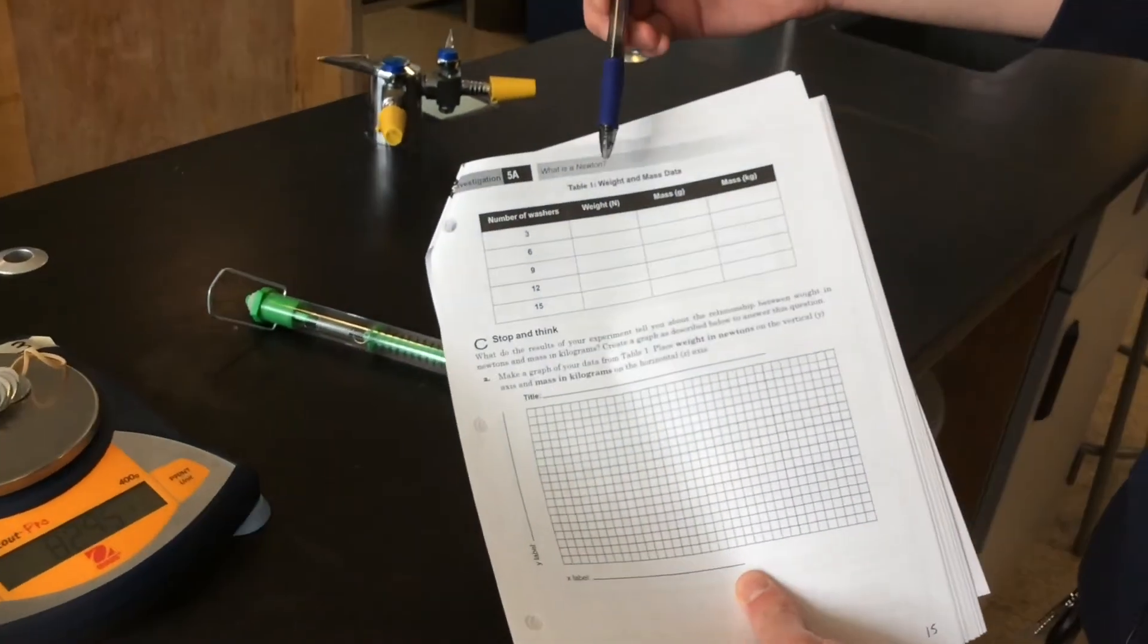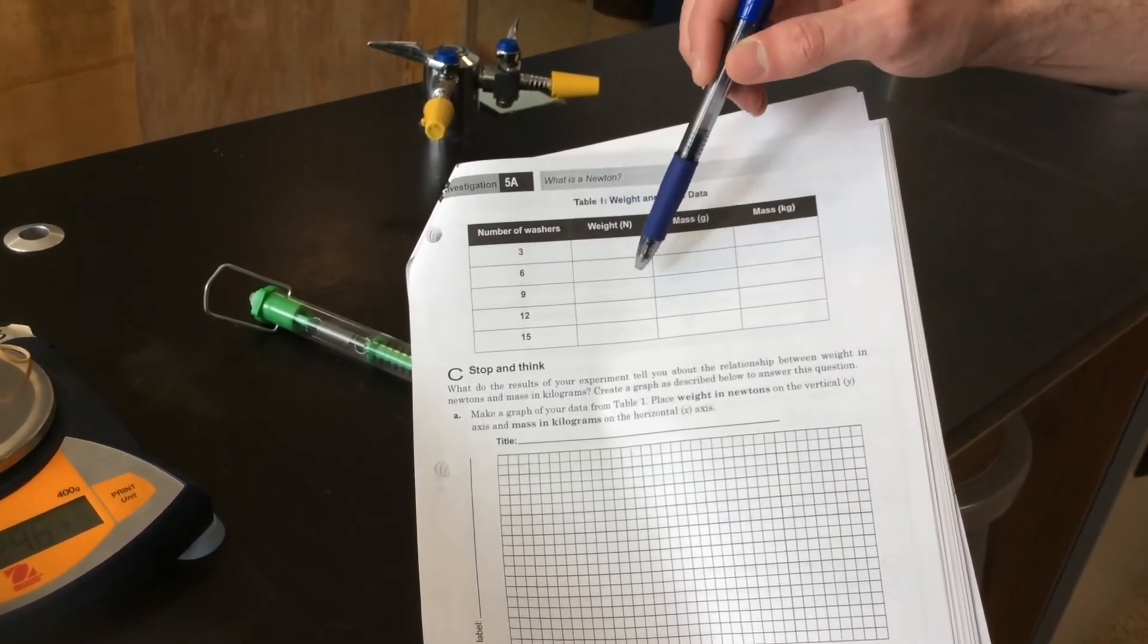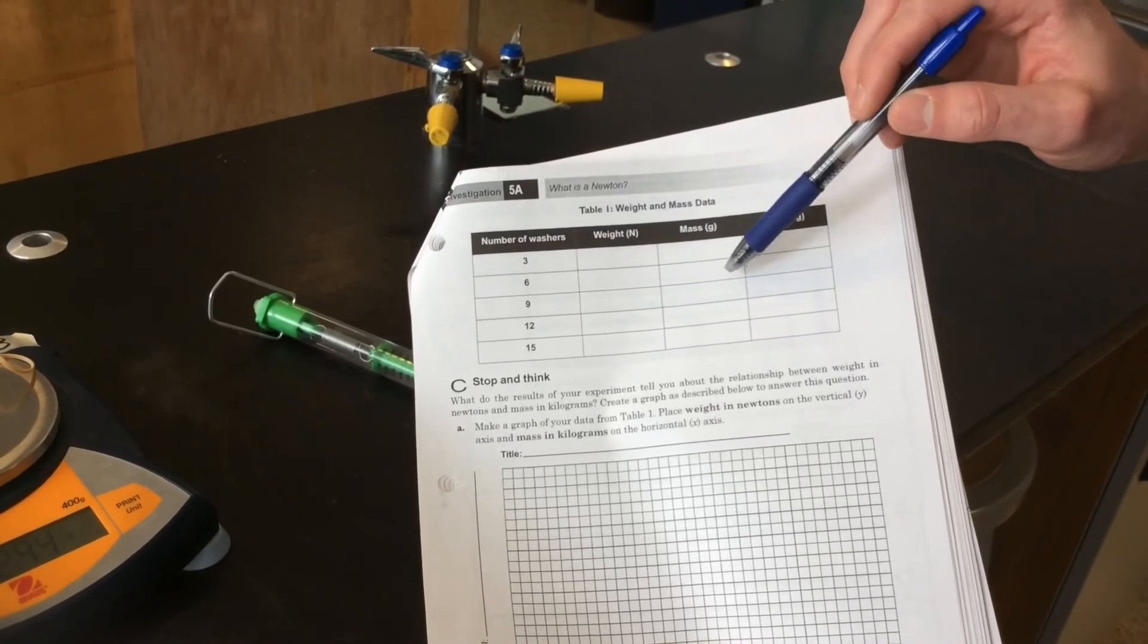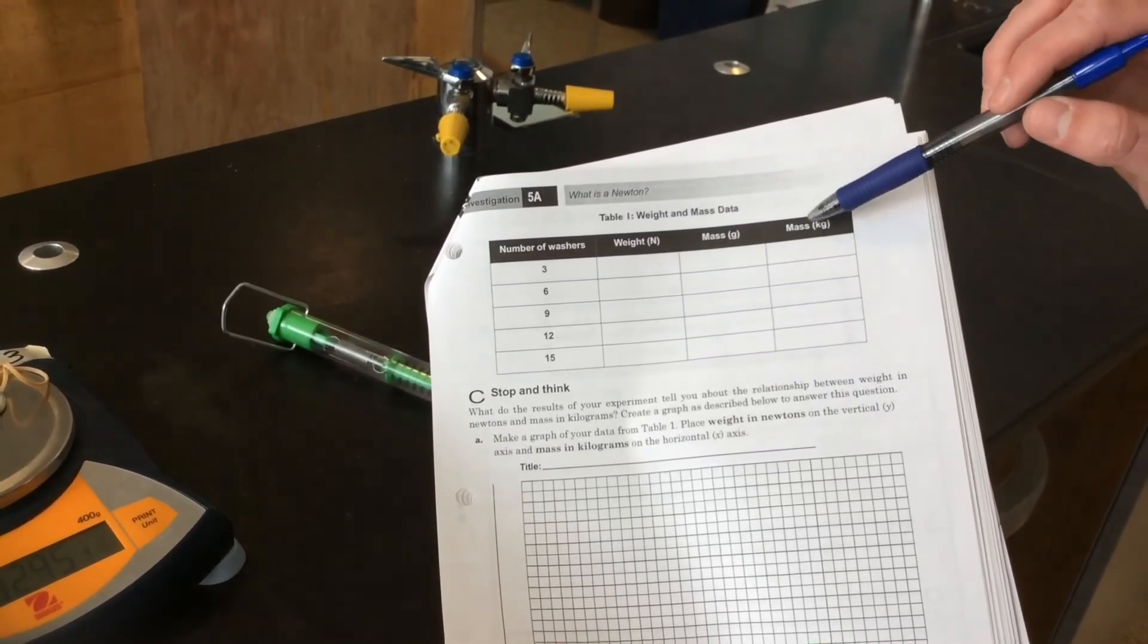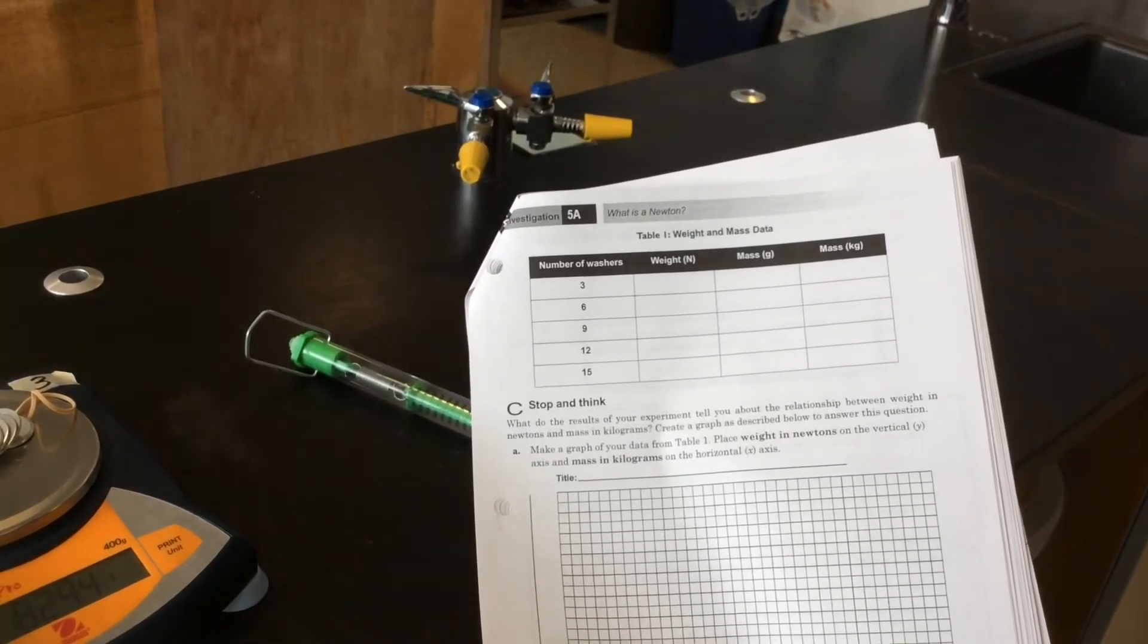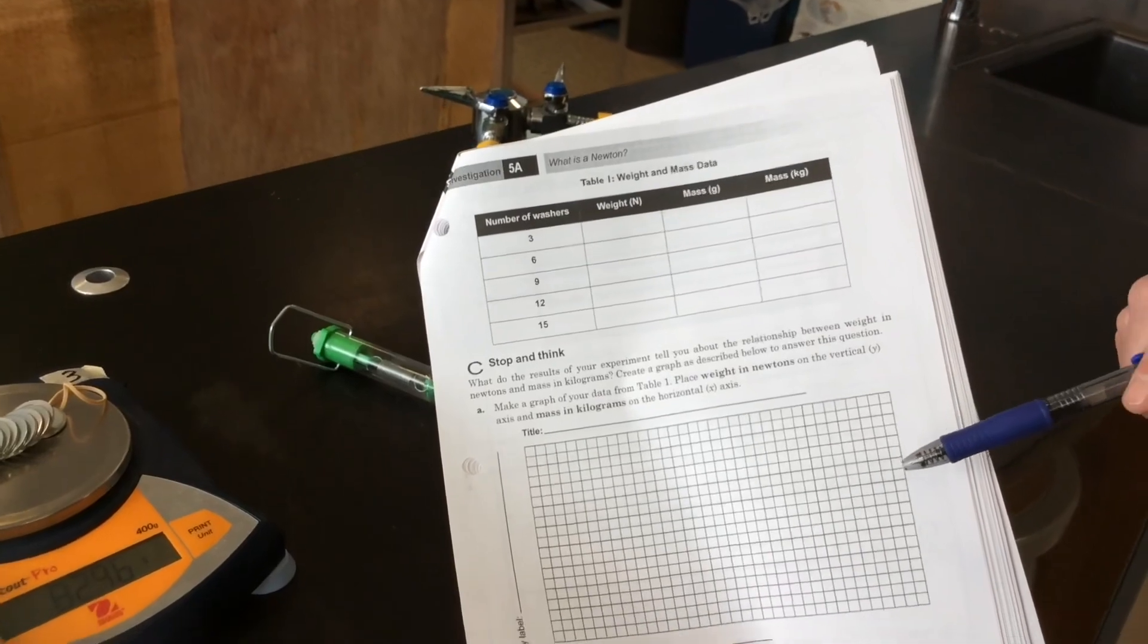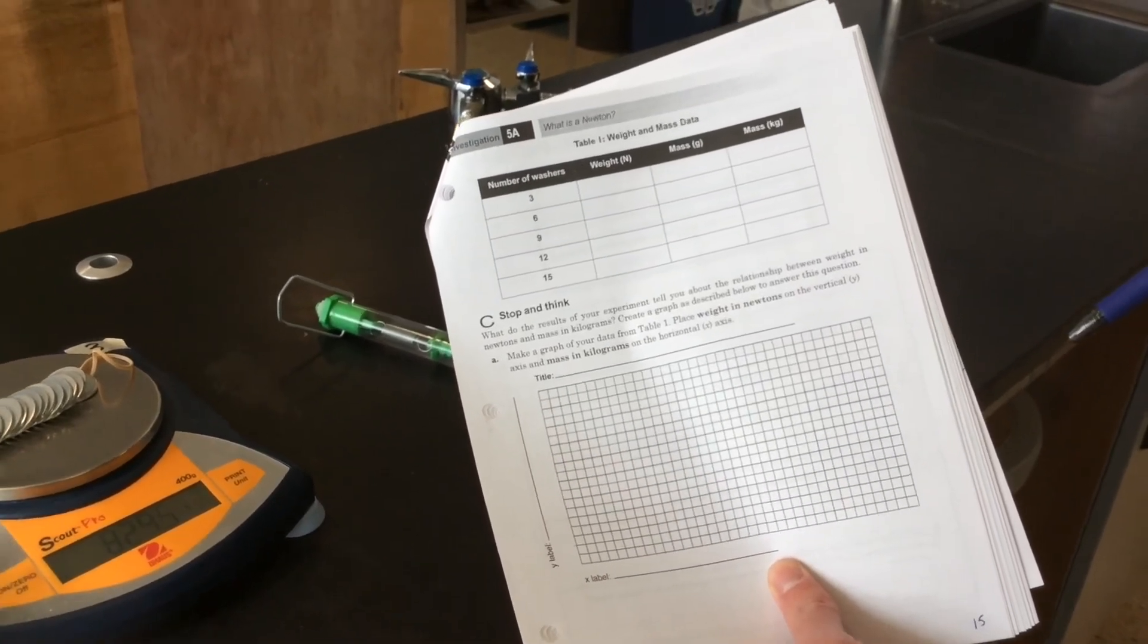And now you should have everything you need to complete your data table. You can go back and pause the video if you need to measure the weights or the masses. And then to get the mass in kilograms, take the mass in grams and slide the decimal over three places. One more video for this lab. I'm going to show you in part C how to complete this graph.